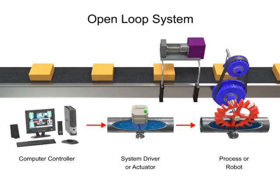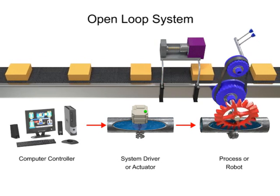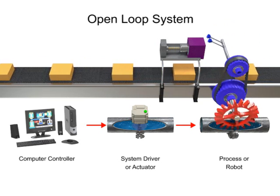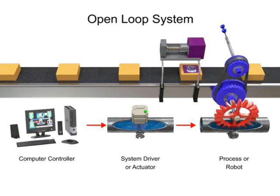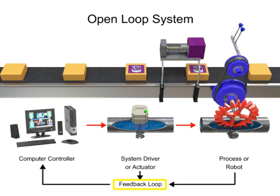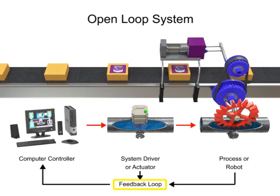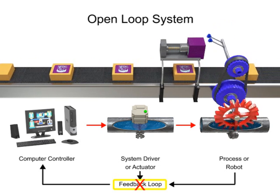For the purposes of this module, we'll focus on robots. Once the signal is received, the robot performs the appropriate action. In an open-loop system, the signals that go from the computer to the system driver to the robot are never checked with a feedback loop to ensure that the robot has completed its task.